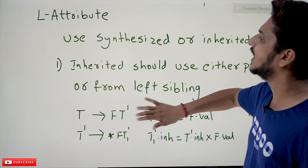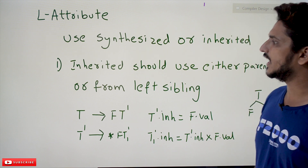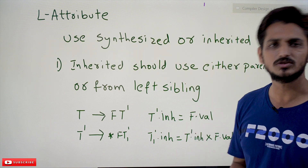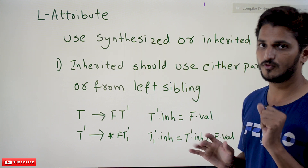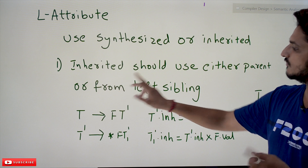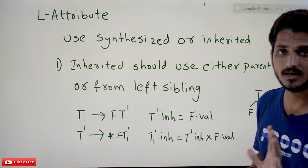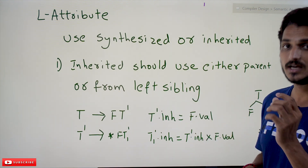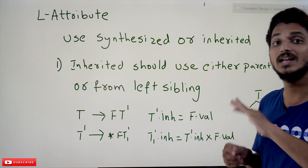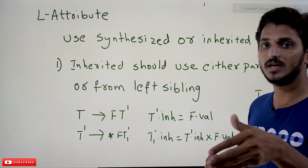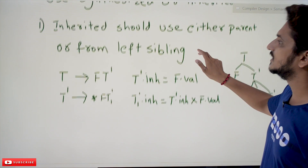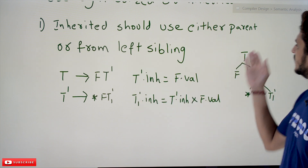Similarly, coming to L-attribute: an SDD is said to be an L-attribute definition when you can have both synthesized and inherited attributes. But you have to follow one condition: inherited attributes must use values either from their parent or from their left sibling only. Why left sibling? Because the top-down approach follows left to right. That is why this inherited attribute definition is helpful in the top-down approach.